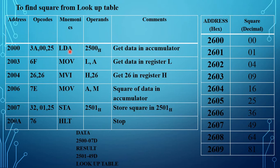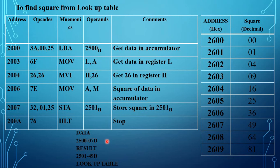The first instruction LDA 2500 loads the content of data address 2500 into the accumulator. The data at 2500 is 07, so 07 is loaded into the accumulator. Next, the accumulator content 07 is moved to the L register. Then MVI H, 26 immediately moves 26 to the H register. So H contains 26 and L contains 07, making HL equal to 2607.